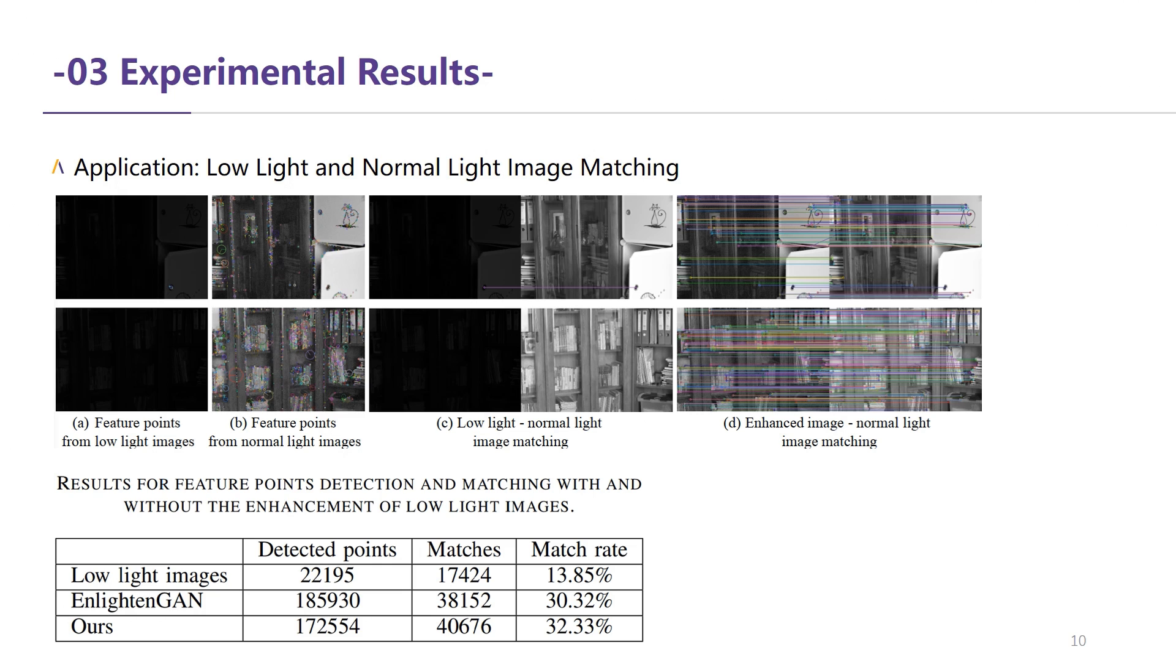We show two downstream applications of our method. The first is image matching. As seen, it's extremely difficult to extract feature points from dark images. After the low-light image enhancement, the match rate can be significantly improved.